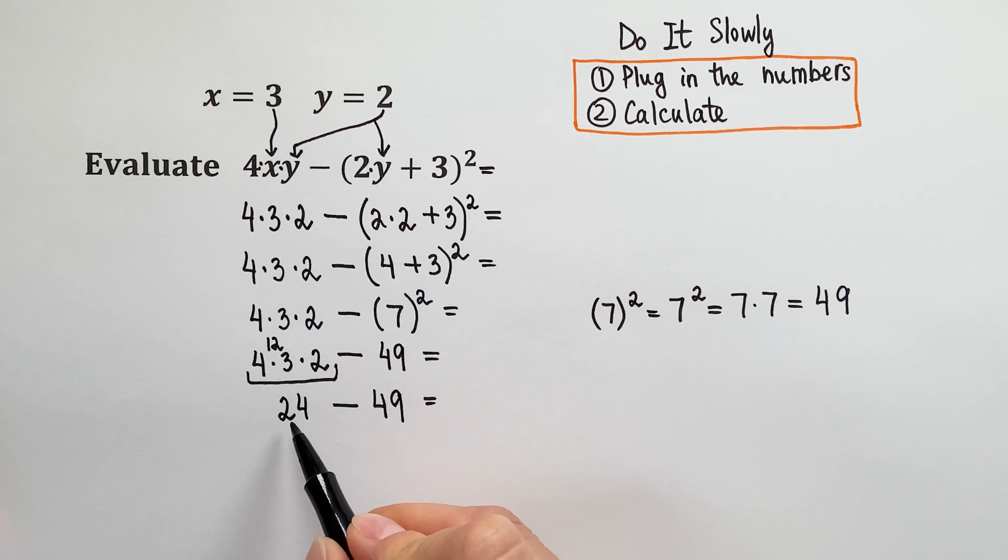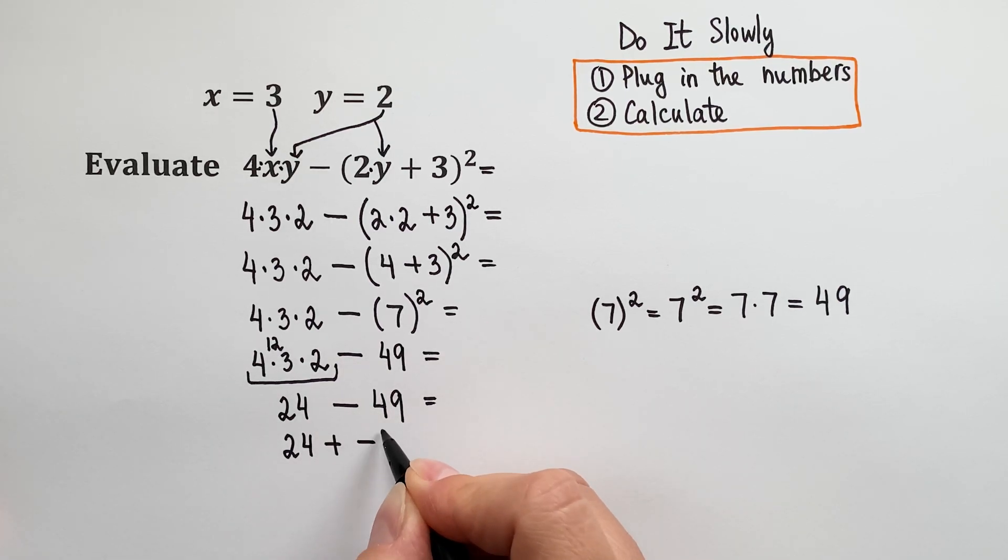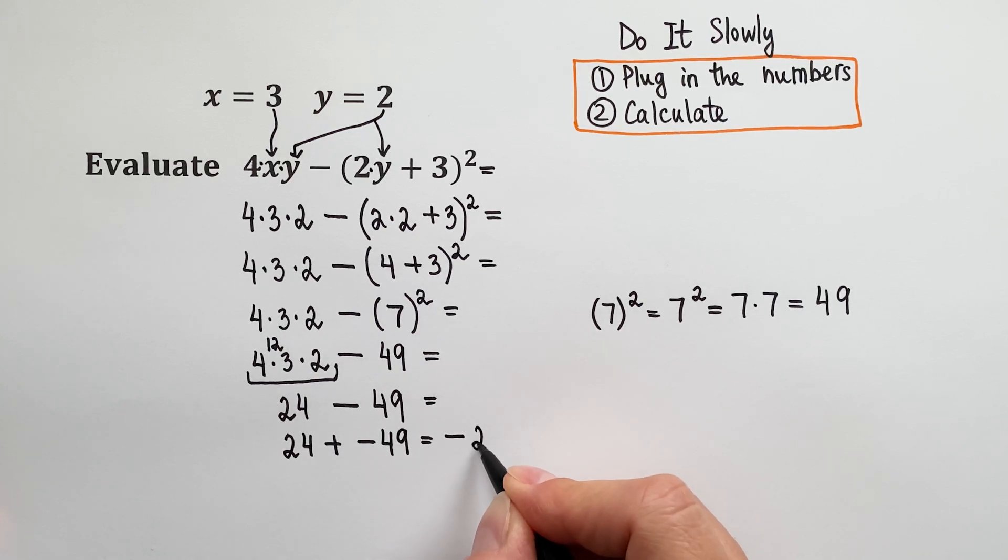Be careful. Look, 24 is way less than 49. So we can rewrite it as 24 plus negative 49. Right? So the result will be negative because we have negative from the 49. And then 49 minus 24 is 25. So the result is negative 25.